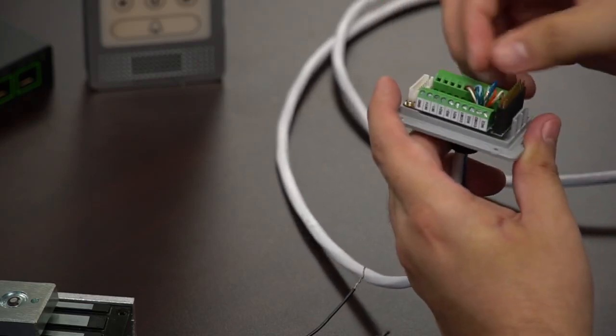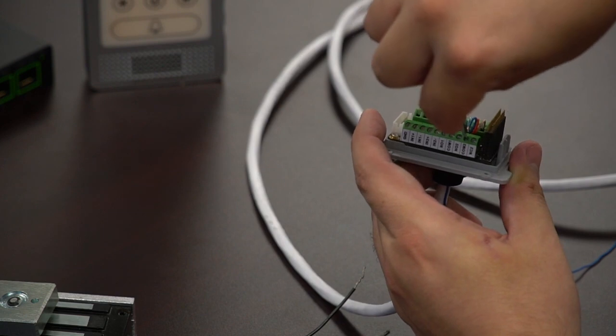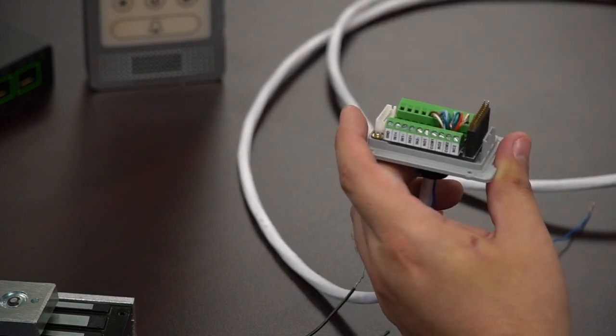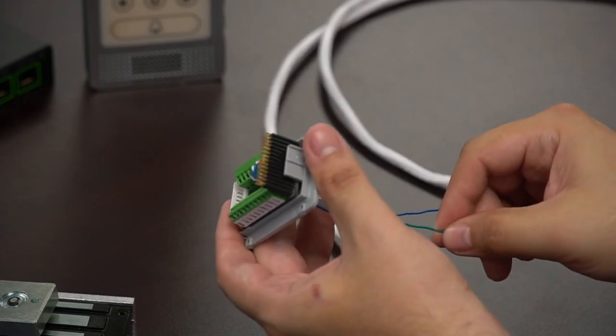As you can see with that first wire, I'm plugging it into COM2. That is the blue wire that's coming out of it. Next, I'm going to be taking a gray wire and connecting that into NC2.